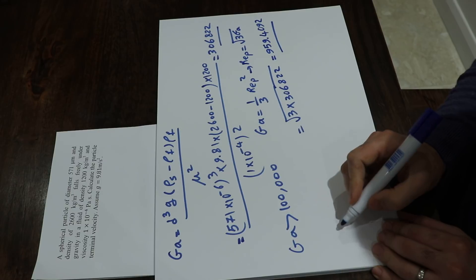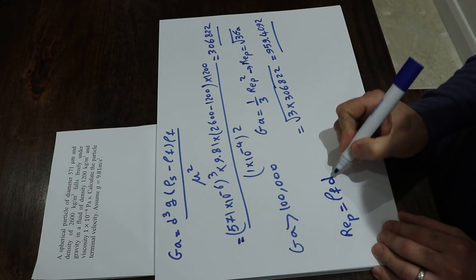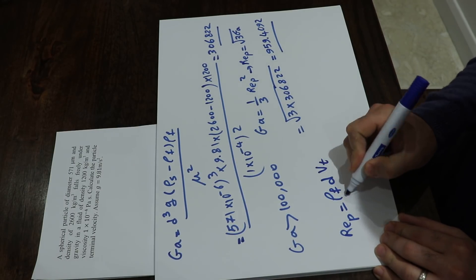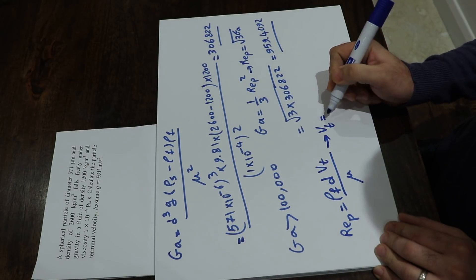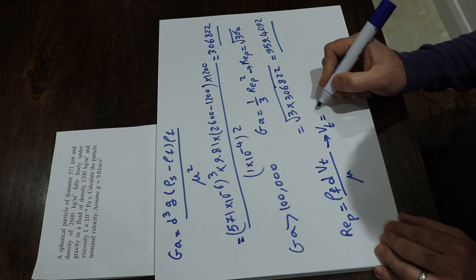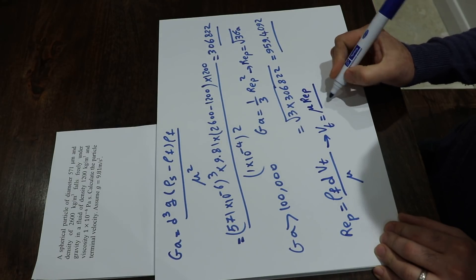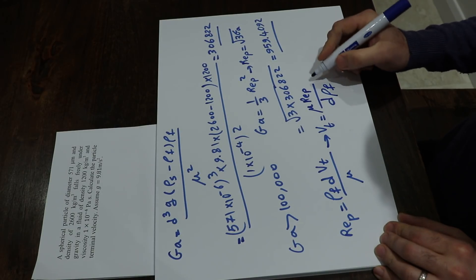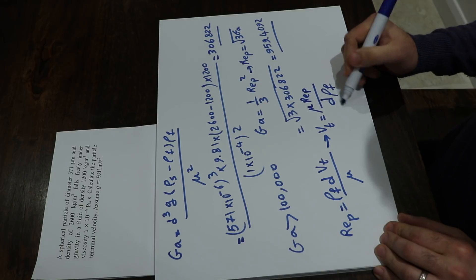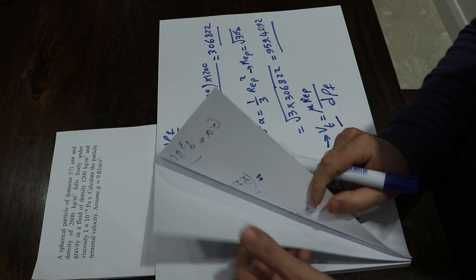We know that the Reynolds number is equal to density times d, that is the diameter, velocity divided by viscosity. Therefore velocity, the terminal velocity which is what is asking the question will be equal to viscosity times Reynolds number divided by d, particle size times density. So all you need to do now is to just substitute the values into this equation and calculate vt.